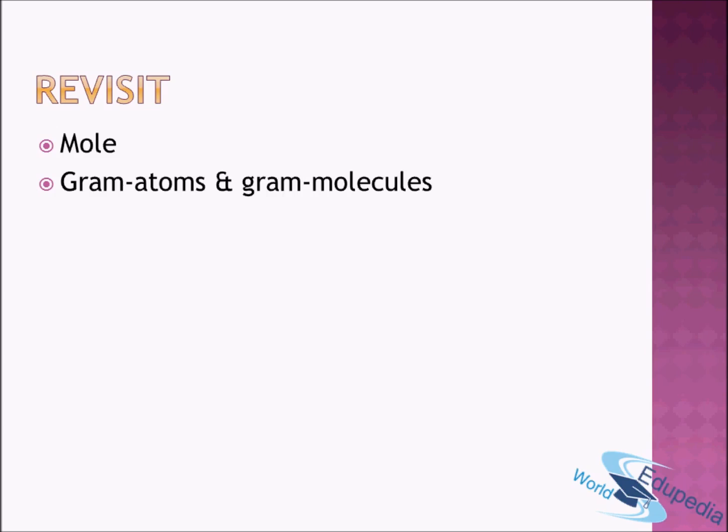We also looked at gram atoms and gram molecules. Gram atoms is just another way of saying one mole of atoms, or two gram atoms is another way of saying two mole atoms. Similarly, gram molecules is another way of saying mole of molecules. This number — mole — is equal to 6.022 × 10²³, and this number we have to remember. It is also called Avogadro's number.